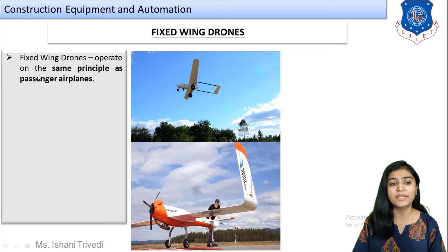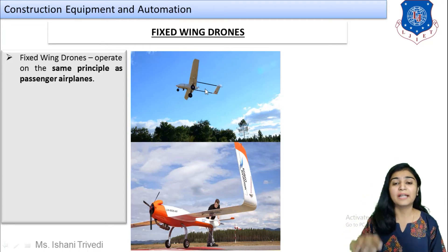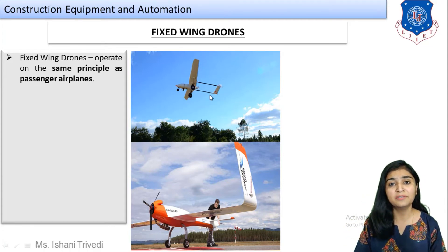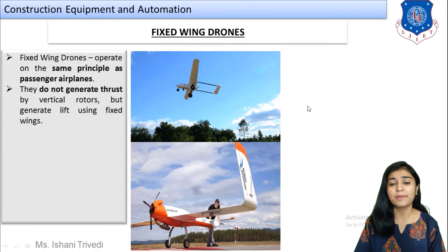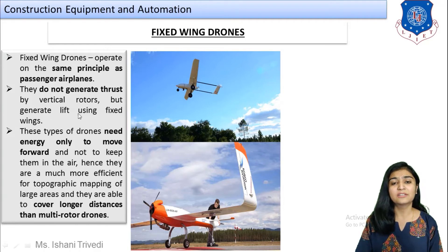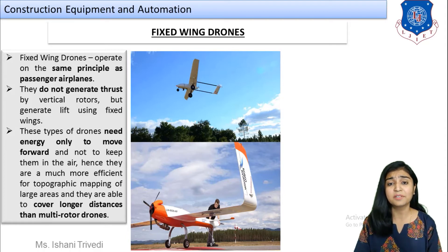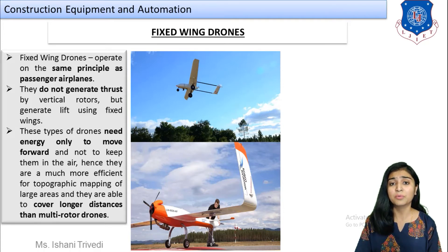Fixed wing drones operate on the same principle as a passenger airplane. You need to provide it a runway to take off and a runway for landing, though sometimes you can also give it a manual hand-launch thrust to make it fly. They do not generate thrust by vertical rotors but generate lift using fixed wings, just like an airplane. These drones need energy only to move forward and not to keep them in the air, unlike copters which require energy and thrust just to stay airborne.